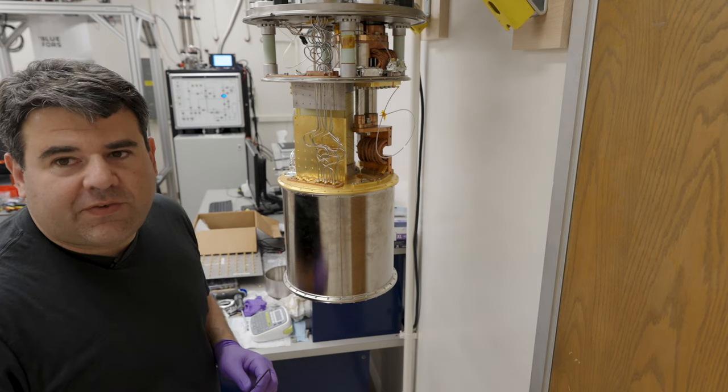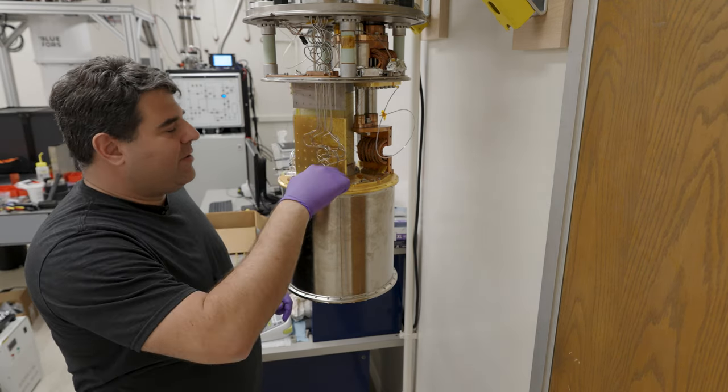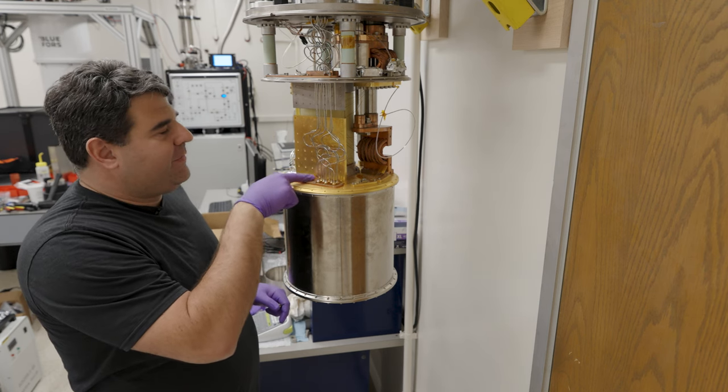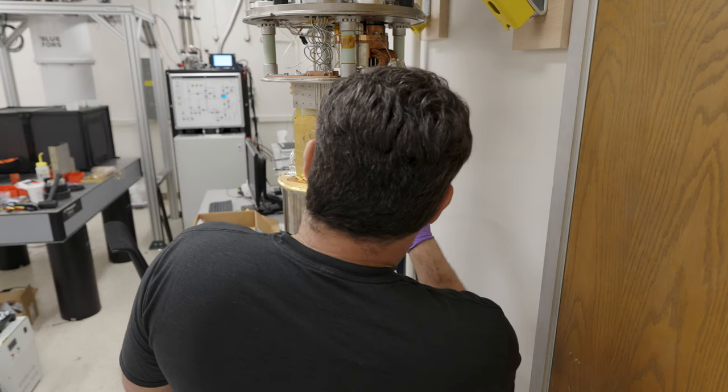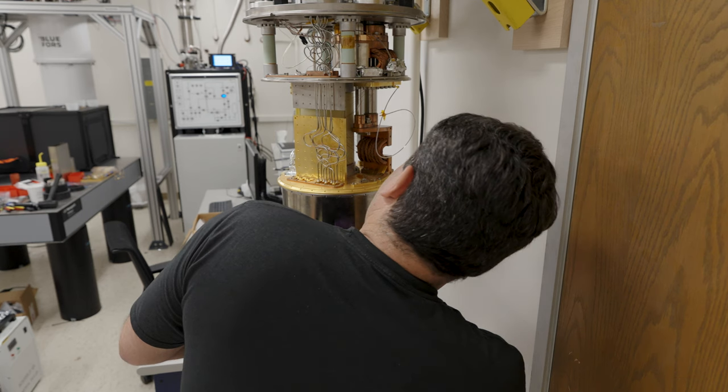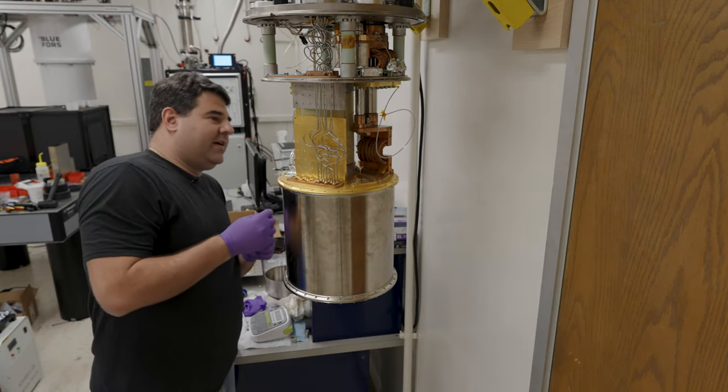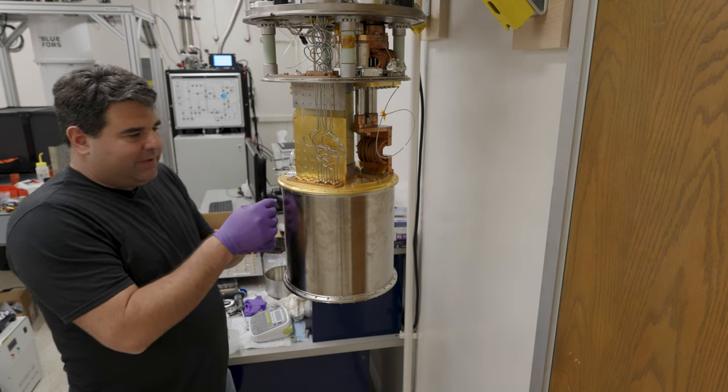So on this one, you'll see we've got the same coaxes coming down to four Kelvin. So we've got eight coaxes to four Kelvin. You can see they built in a provision to put eight more in, but never actually did it. Then there's this micro D connector. That's coming through here, bringing DC wiring in, got the magnet wires here. Everything looks pretty stock up to this point.